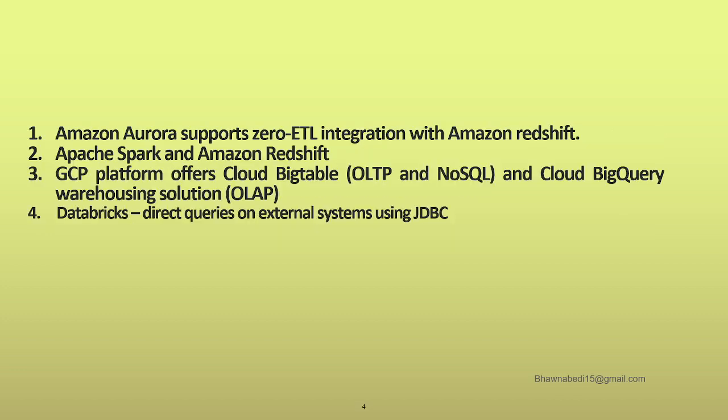Amazon has come up with an integration between Amazon Redshift and Amazon Aurora. Redshift is a data warehouse, and Aurora is a transactional database. In a traditional setup, as soon as data arrives in the transactional database, you push it to the data warehouse and then perform your analytical queries on the data warehouse.